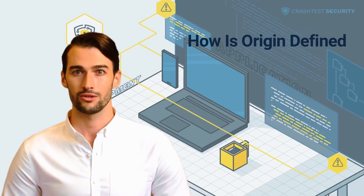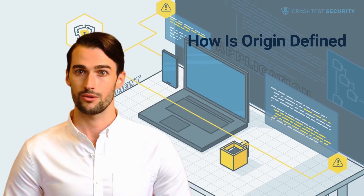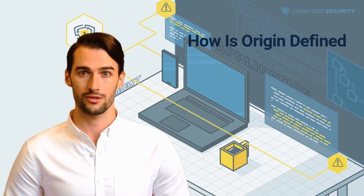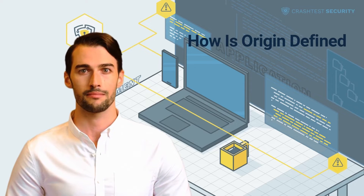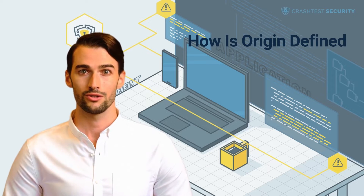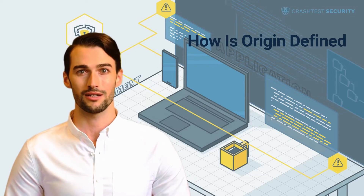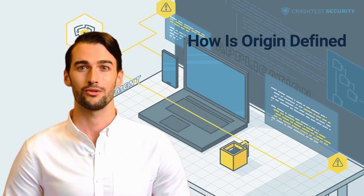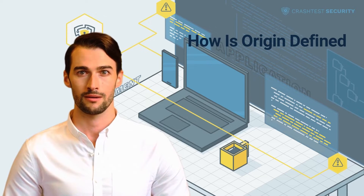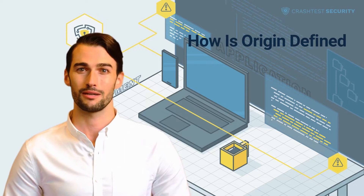In the context of the internet, an origin is the combination of a uniform resource identifier scheme, a hostname or domain, and a port number. So let's take the main page of our blog: https://crashdesk-security.com/security-penetration-testing-blog. Here, the scheme is https, the host is crashdesk-security.com, and the port number is 443 — the default port number for https.